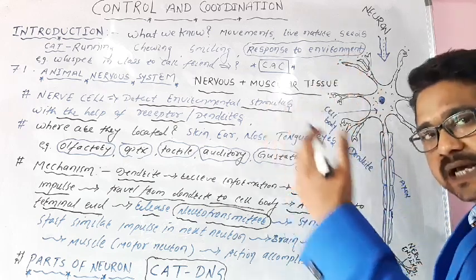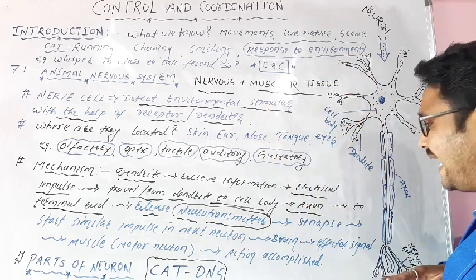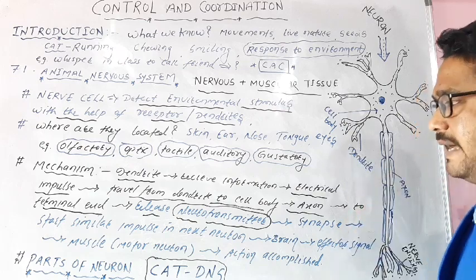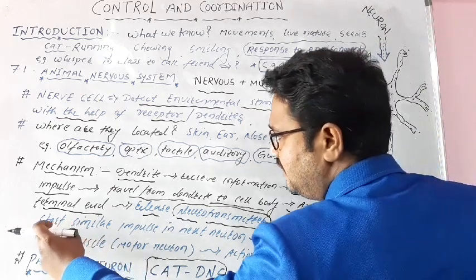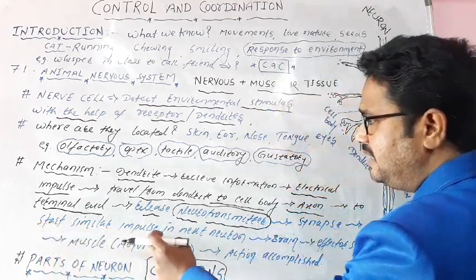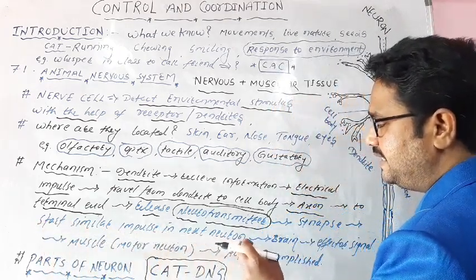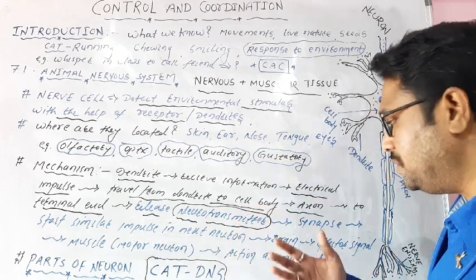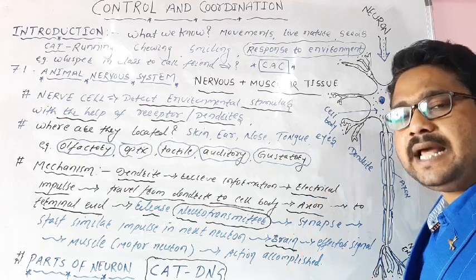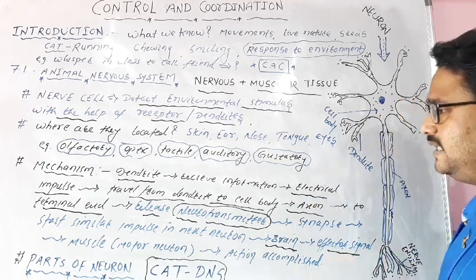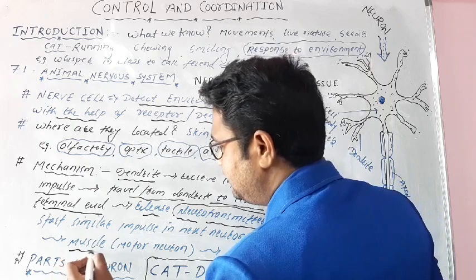The place where the first neuron releases neurotransmitter and the dendrites of another neuron receive this information is called the synapse or gap junction between two neurons. Upon receiving this neurotransmitter, a similar impulse is generated in the next neuron which goes to the brain. The brain processes and decides what action to be taken.